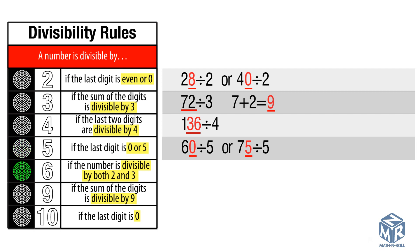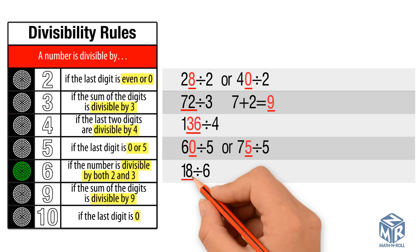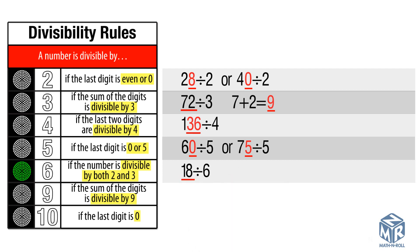A number is divisible by 6 if the number is divisible by both 2 and 3. 18 divided by 6: 18 is divisible by both 2 and 3, so 18 is divisible by 6.